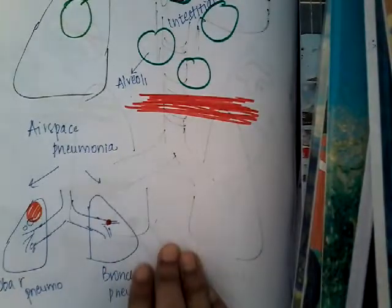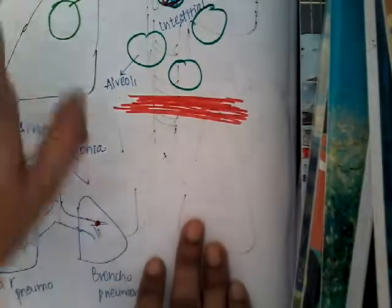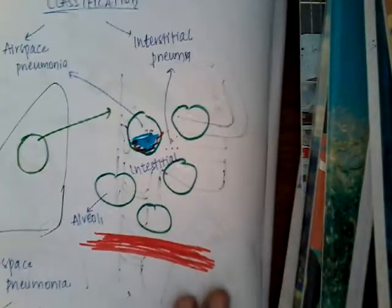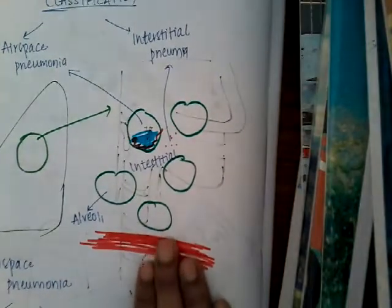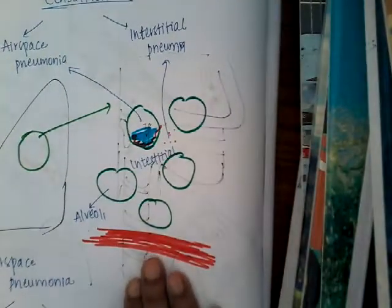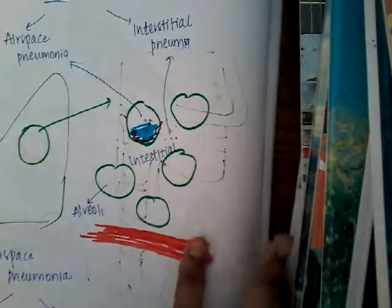So these are the two different types of pneumonia: lobar pneumonia, bronchopneumonia, airspace pneumonia, and interstitial pneumonia. This is about the classification of pneumonia. Thank you for watching my lecture. In my next class, I will explain about each type of pneumonia in detail.